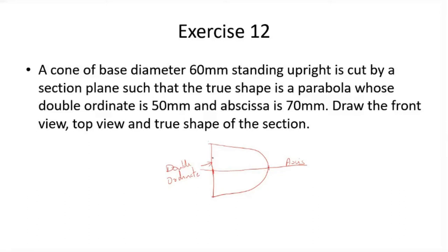The abscissa is the distance from the point of intersection of the axis with the double ordinate to the vertex. So that is the abscissa. This is the condition for the abscissa and double ordinate of a parabola.